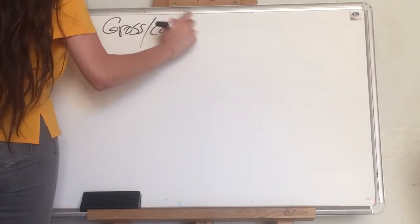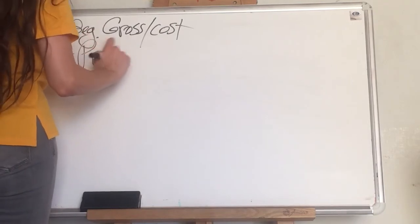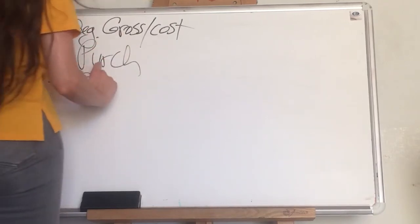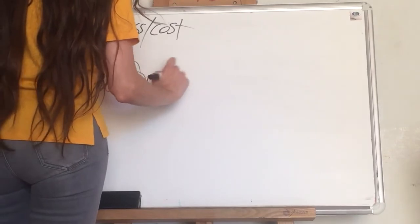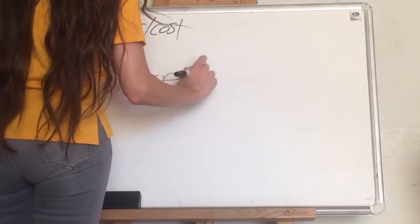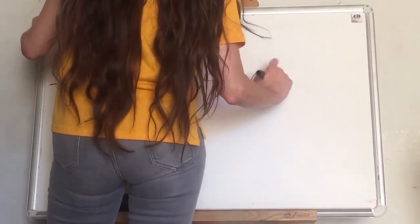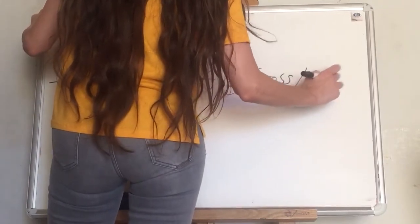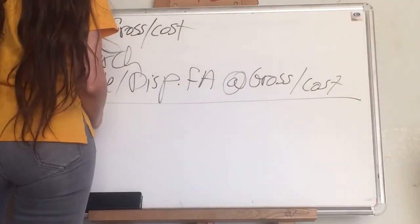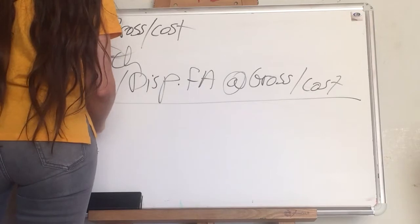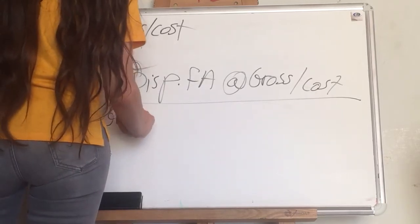Now I want you to understand the following formula for fixed assets: beginning gross (or cost) plus purchases, plus or minus sale or disposal of fixed assets at gross or cost, equals ending gross or cost.